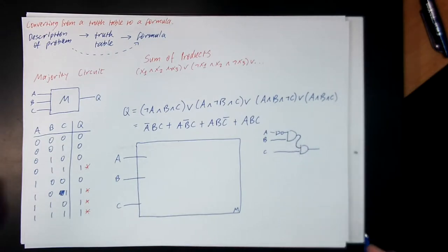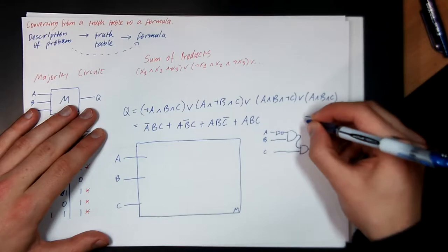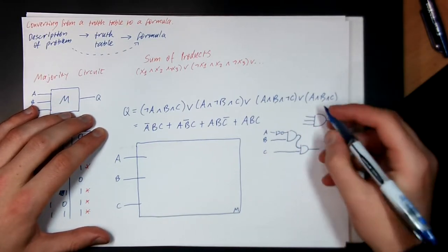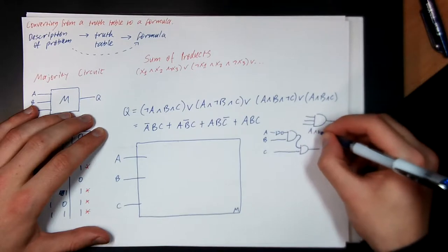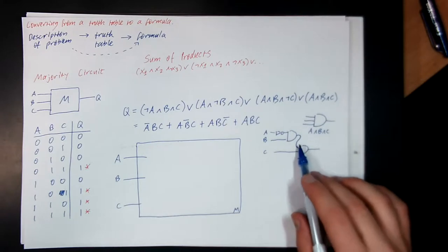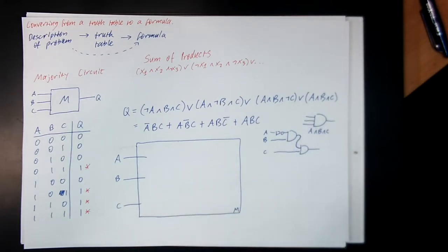But there's a slightly more compact notation we can use. I can actually draw an AND gate with three inputs. And this logic gate here basically does the operation A, AND, B and C. I mean, internally, it's really just two AND gates doubled up back to back. But it means drawing the circuit diagram is a little bit easier.